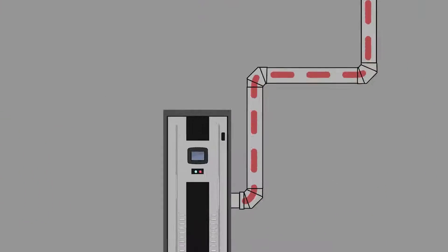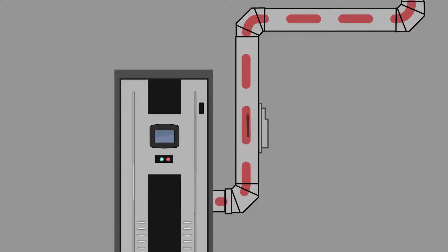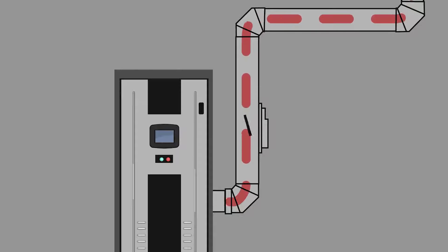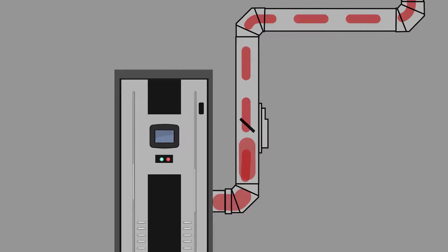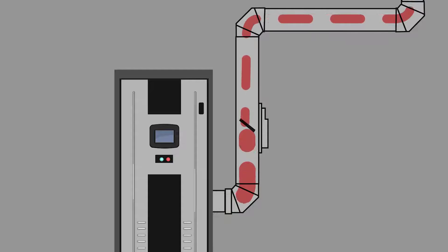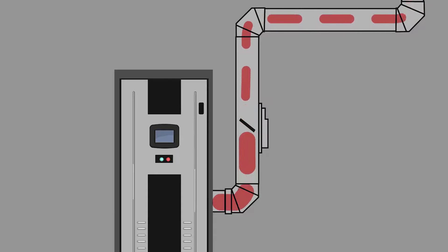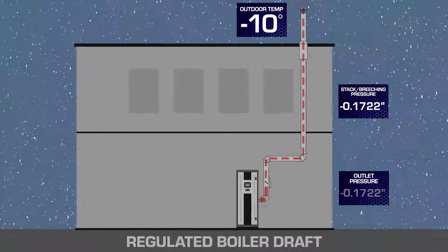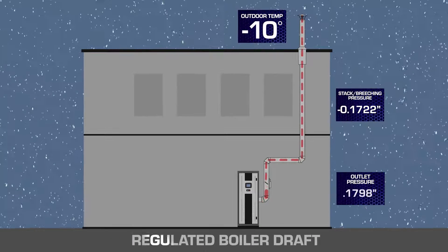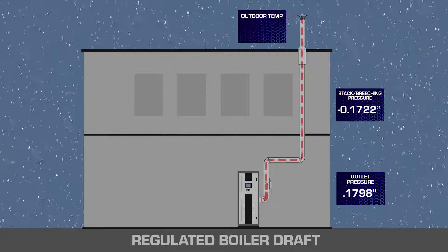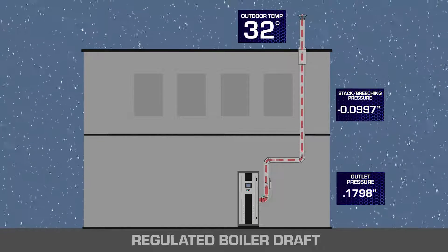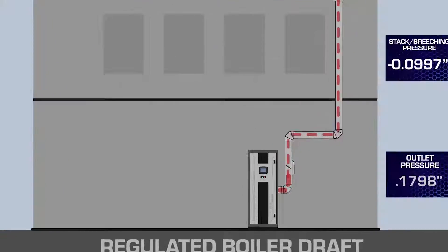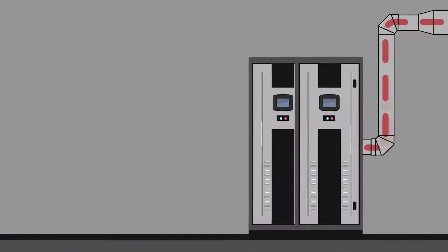To ensure Category 4 operation, Shebbler sequence draft control dampers can be applied to this system. These actuated dampers will control the outlet pressure of each appliance to make sure Category 4 operation is accomplished at all times, under all firing rates and all ambient temperature conditions.